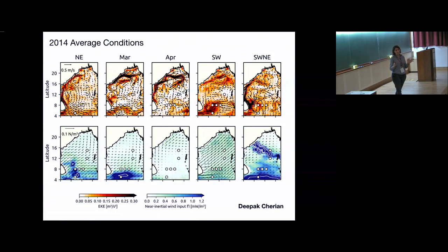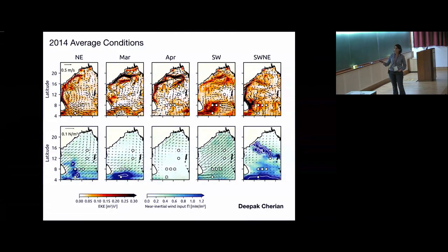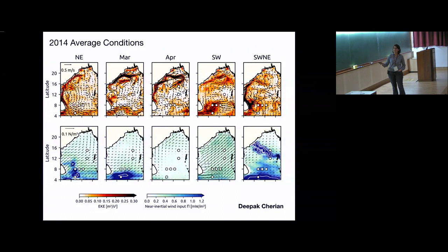Winds don't just drive Ekman transport — they also force internal waves at the near-inertial frequency. The lower panels show the near-inertial wind energy input into the mixed layer. Individual storm tracks are visible — this is cyclone HUD-HUD and cyclone MADI for 2014 — along with a seasonal cycle of stronger input during the southwest and northeast monsoons.